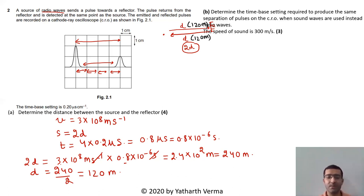Now there is another question over here. Determine the time-base setting required to produce the same separation on the CRO when sound waves are used, and speed of sound is 300 meters per second. So we are getting the same trace, the distance covered will be the same, but a different wave was sent. Sound wave was sent, meaning the speed was changed. First of all we know that distance s equals speed times time taken.